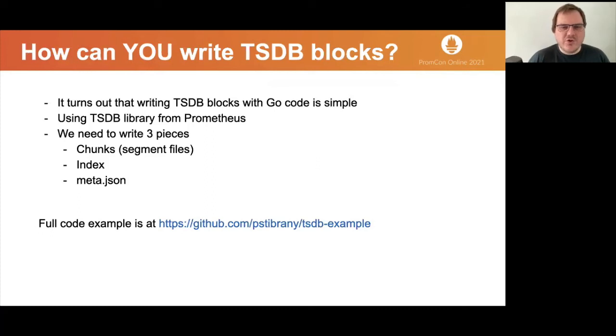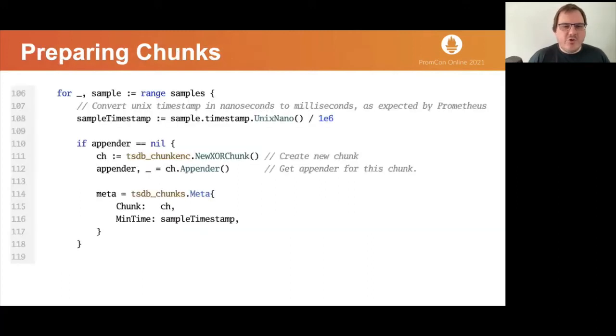In the last part of the talk, I want to show you how you can write TSDB blocks by some simple Go code. Of course, if you want to convert some data to TSDB blocks, you can also use the new Prometheus backfilling tool. But sometimes it may be more efficient to write TSDB blocks directly without converting data to open metrics format first. And it's also easy and fun. To generate TSDB block, we need to do three steps. Write chunks into segment files, write index, and write meta JSON file. And we will use TSDB library from Prometheus to do that. You can find full example at provided link.